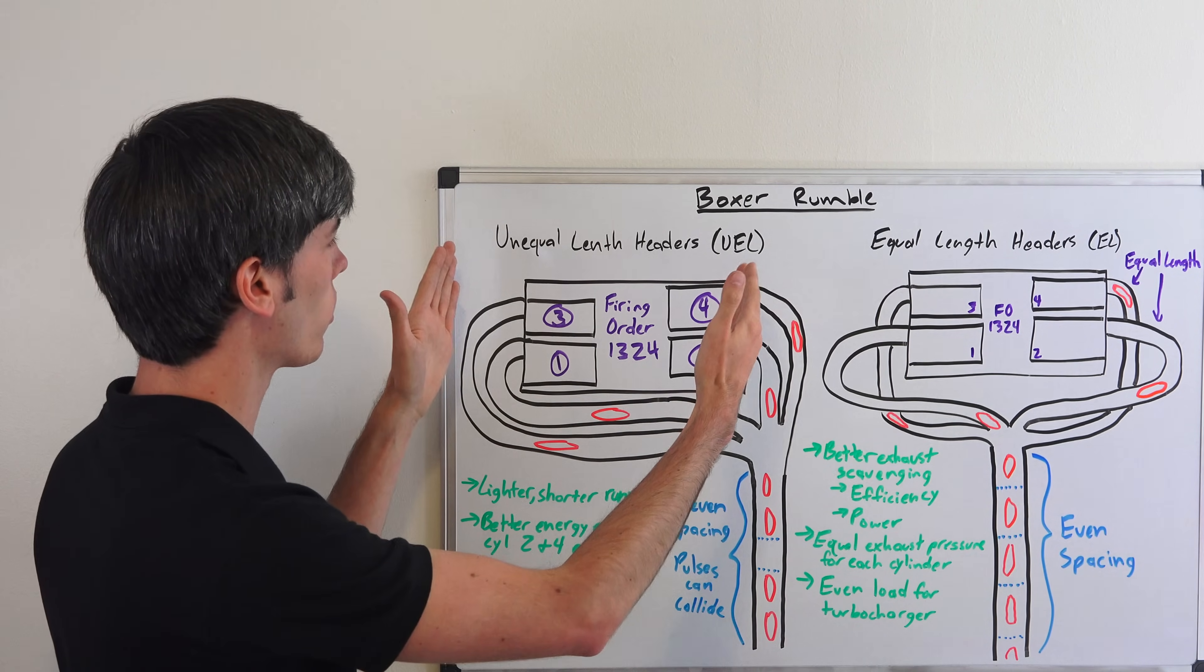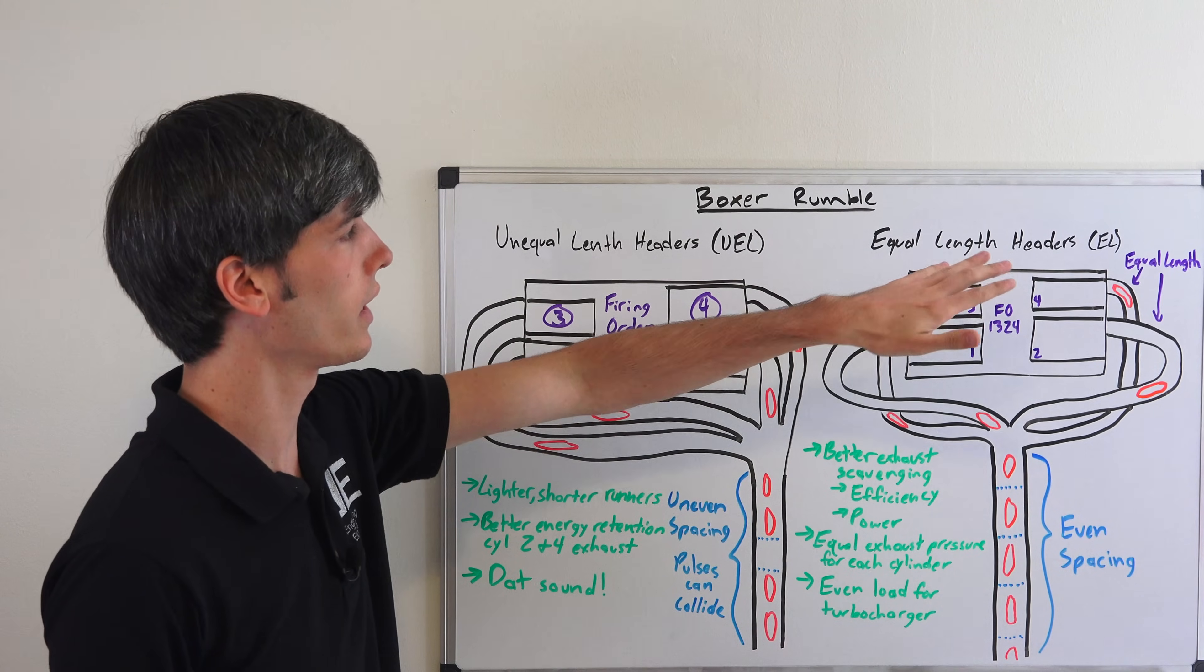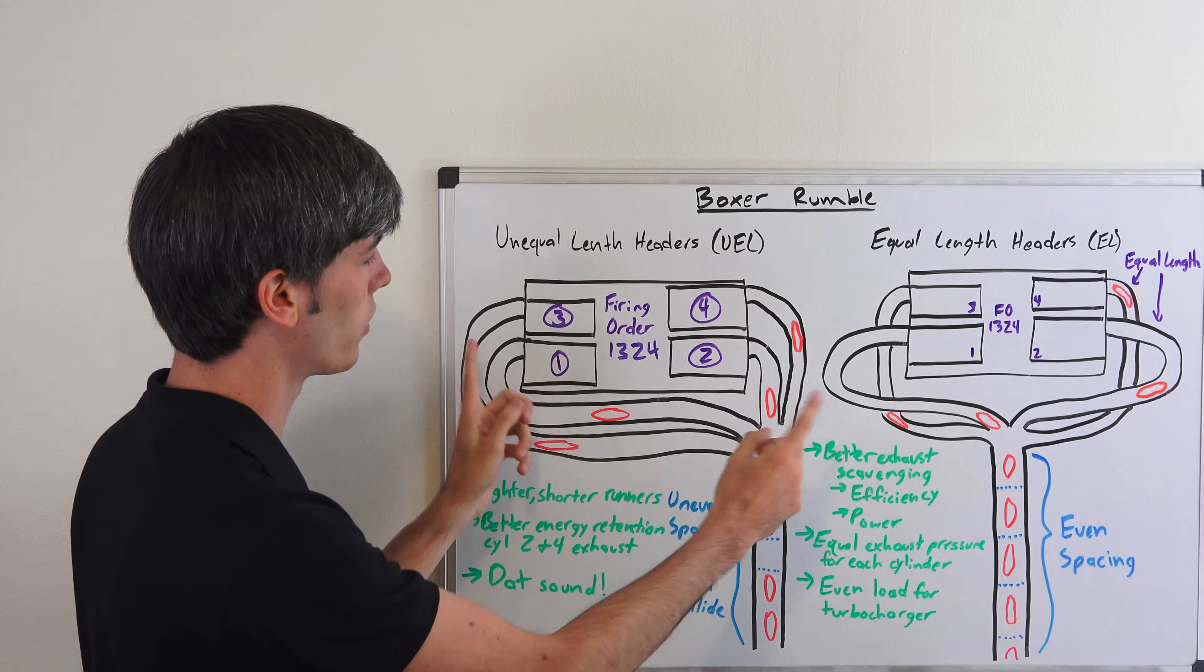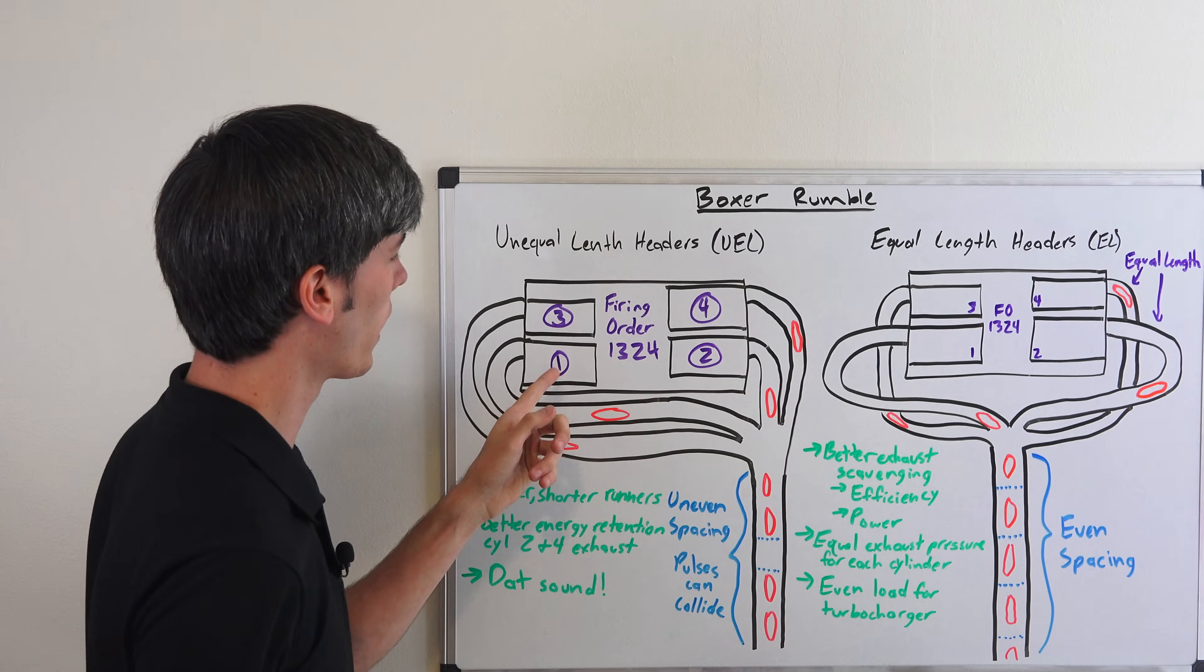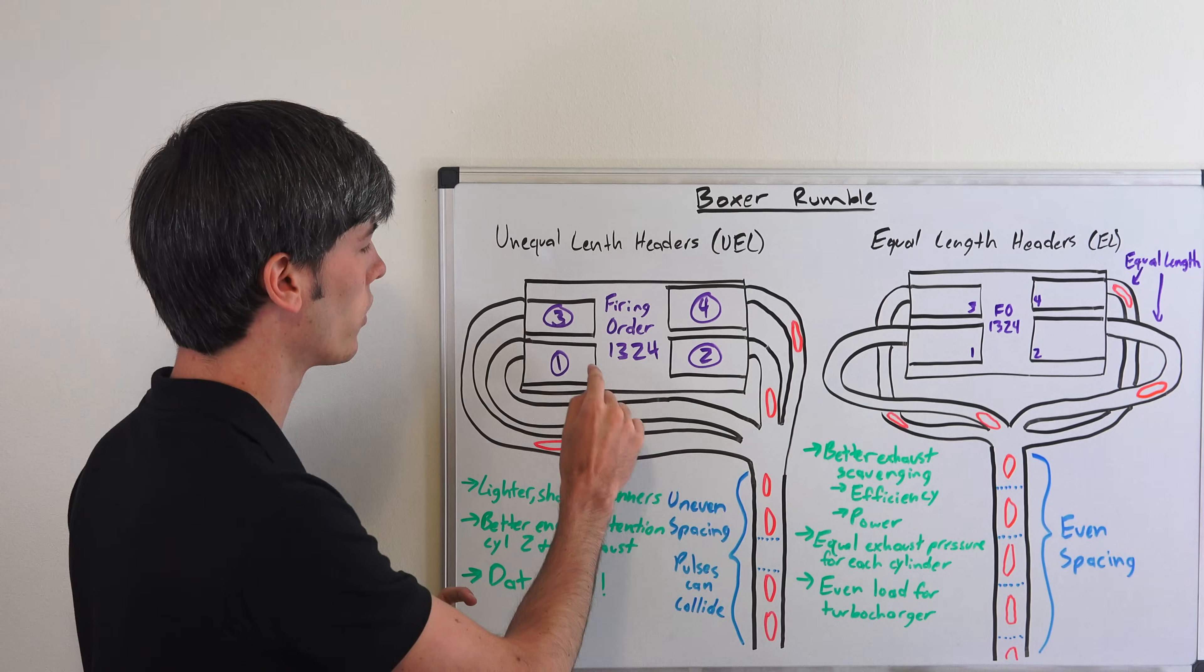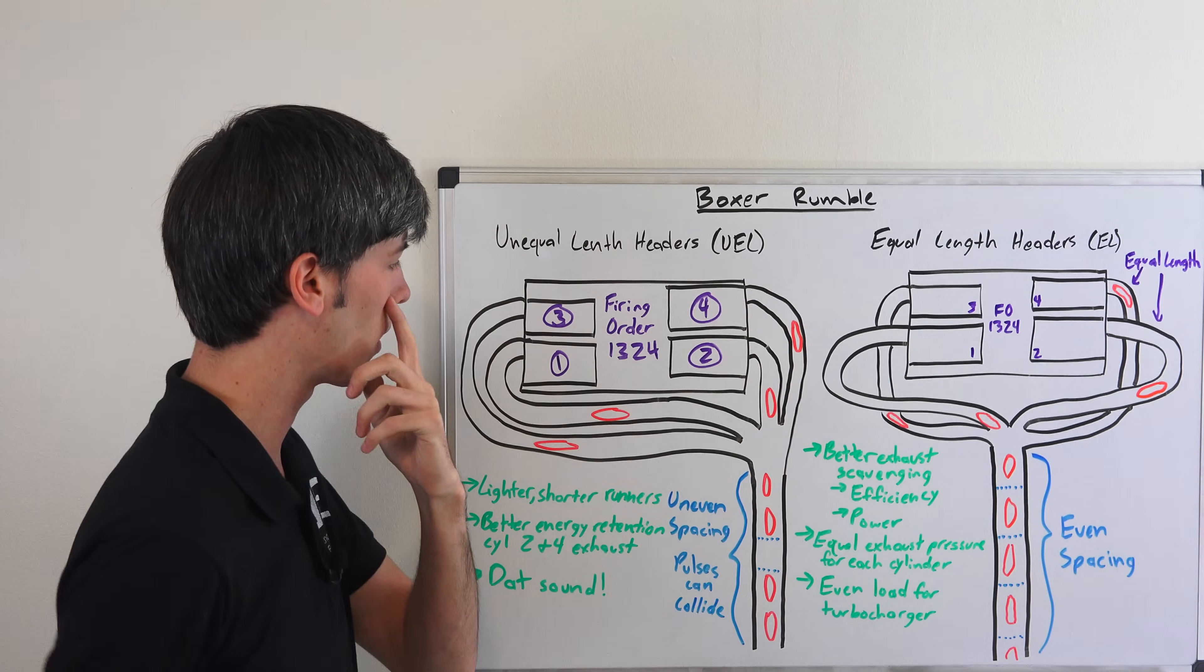First we're going to be checking out unequal length headers and then looking at equal length headers. Here we have a Boxer engine, a four cylinder that lays flat. The pistons fire like this and we have cylinders one, two, three, and four. Our firing order is one, three, two, and then four.